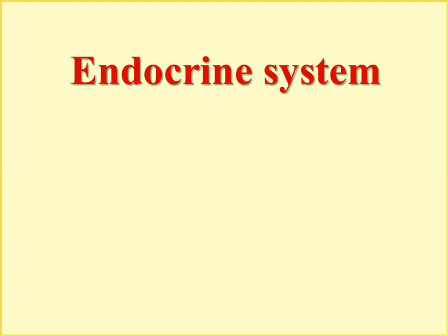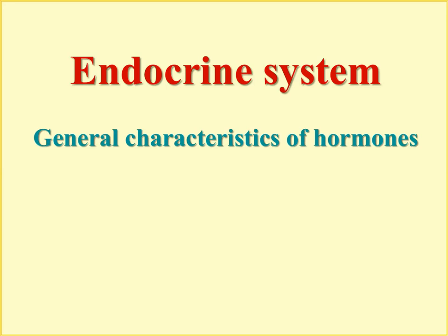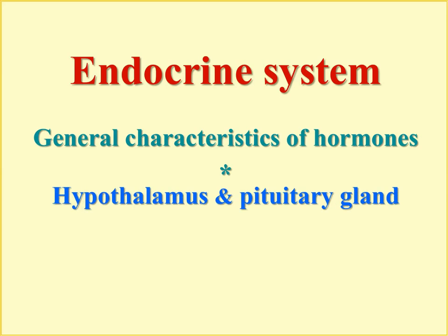In the first part of the lecture, the general principles of chemical signaling were considered. In this second part, we are going to learn the main examples of chemical signaling operation — the action of hormones produced by the endocrine system. First, we need to consider general characteristics of hormones, mainly the mechanisms of their action, and then we will learn the hypothalamus and pituitary system that controls many other endocrine glands.